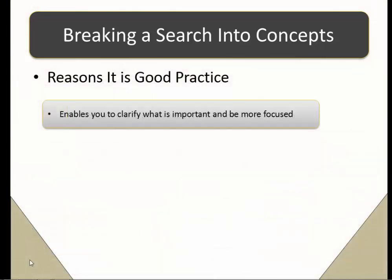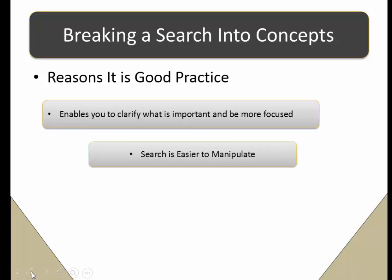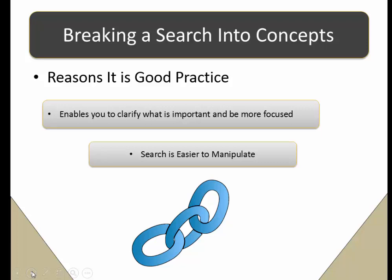Aside from enabling you to do a more focused search, breaking your search up into concepts and then bringing them together will also enable you to manipulate your search more easily. Many times when we do a search, everybody wants to put every term they want to search in the box. When you do this, it's kind of like chaining them together. You may find the first link in your chain is hospital acquired infections, the second link may be nurses, and the third link may be hand washing. The problem is that nurses, the middle link, may be throwing off your search or making it too narrow, and you may want to remove it. If you link everything together, you'll find yourself having to retype the terms in order to remove the middle link.